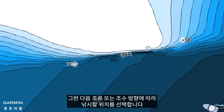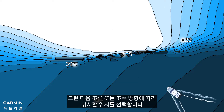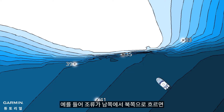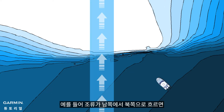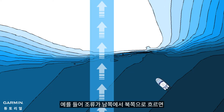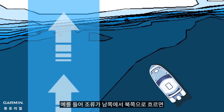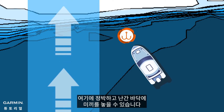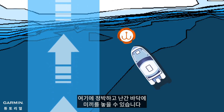Choose your location to fish based on current or tide direction. For example, if the current is from south to north, you can anchor here and place the bait at the bottom of the ledge.